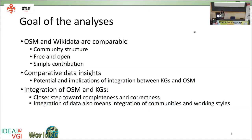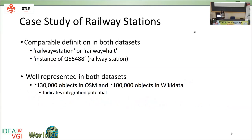Why did we select railway stations? The analysis cannot be applied to the whole dataset because communities and definitions differ — we need to first know which classes are actually equivalent. In the case of railway stations, it was straightforward: 'railway=station' or 'railway=halt' from OSM is equivalent to 'instance of: railway station' in Wikidata. We also need a significant amount of data present on both sides for integration to make sense. Railway stations have around 130,000 objects in OSM and around 100,000 in Wikidata, which shows good integration potential.